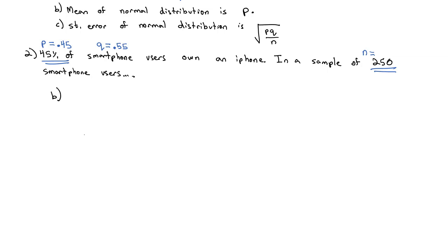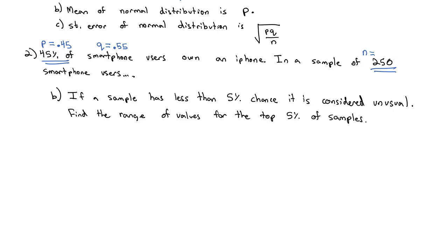Let's try an inverse command using the Central Limit Theorem. In statistics, we say if a sample has less than 5% chance, it is considered unusual. We want to find the range of values for the top 5% of samples. In other words, what percentages would be too high that we would consider them unusual?